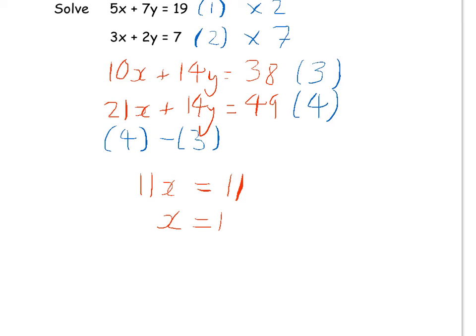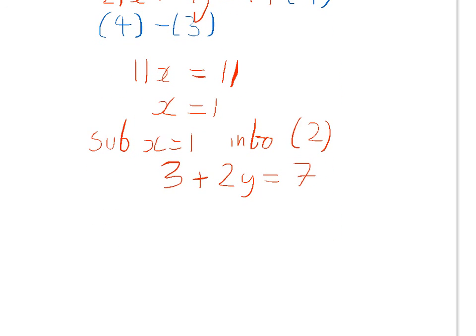Now, to find out what the y-component is, we need to substitute x equals one into either equation number one or equation number two. I'm going to pick number two. So, we're going to have three times one, which is three, plus 2y equals seven. You'll find that 2y is equal to four, so y is equal to two.